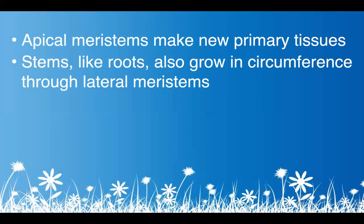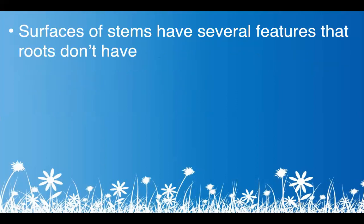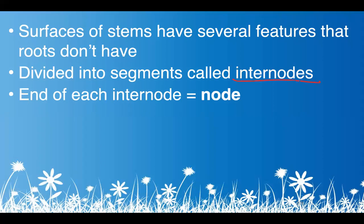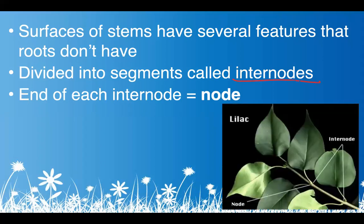The apical meristem makes new primary tissues — all of the primary dermal tissue, ground tissue, xylem, and phloem occur at the tips. Stems, like roots, can also grow in circumference through lateral meristems. Stems are divided into segments called internodes; each end of an internode is called a node. On a lilac branch, for example, each point where leaves emerge is a node, and the distance from node to node is an internode. You don't see that in roots.